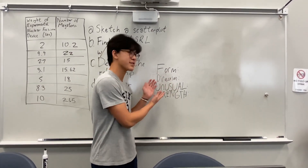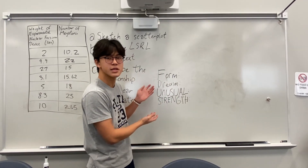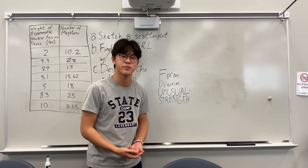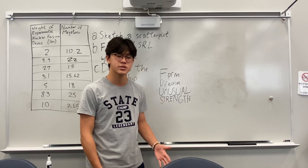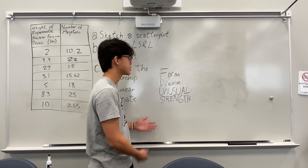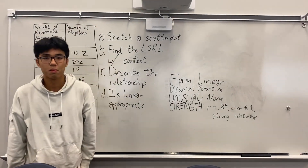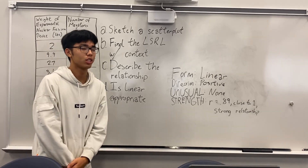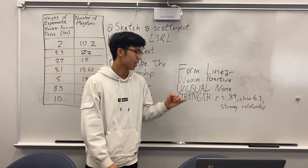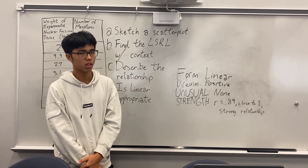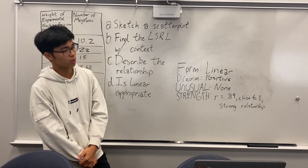To describe the relationship we can use the acronym FDUS. Form is always linear. Direction is positive or negative based off of the data. Unusual is any outliers or strange spots in your data. Strength is interpreted using R. So this is the relationship between the data: the form is linear, the direction is positive, there is no unusual points, and R is 0.89, close to 1, which means it has a strong relationship.